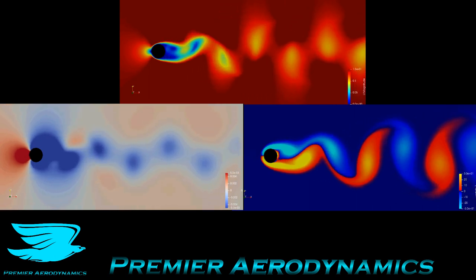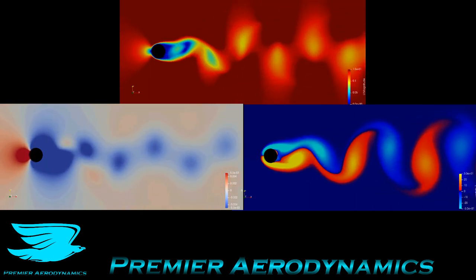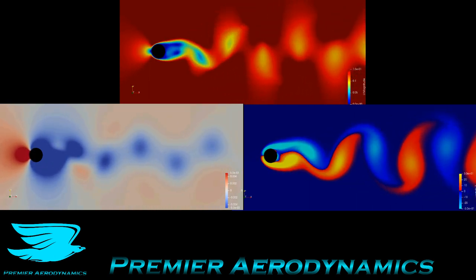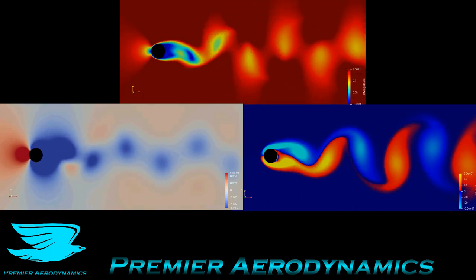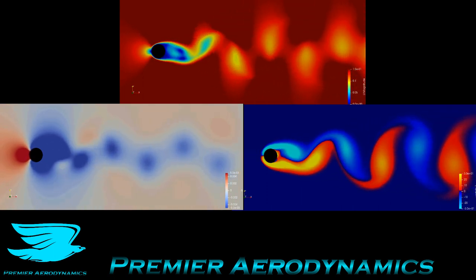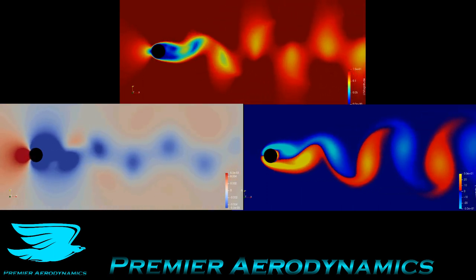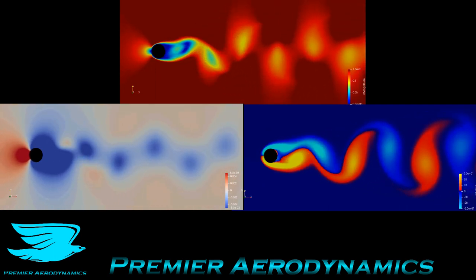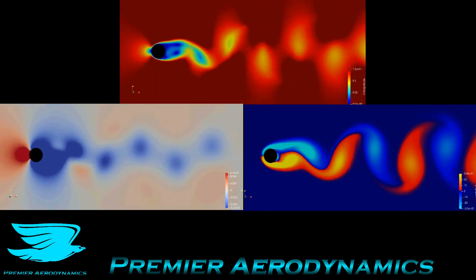As you change the Reynolds number the Strouhal number will be different and the Strouhal number is a non-dimensional number that allows you to compare the frequency shedding of an object, not just a cylinder but any object at different conditions. So different length scales and different velocity scales.